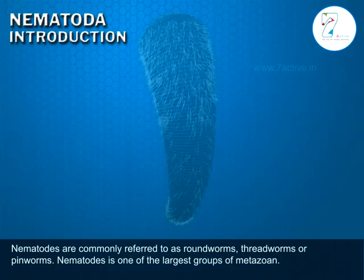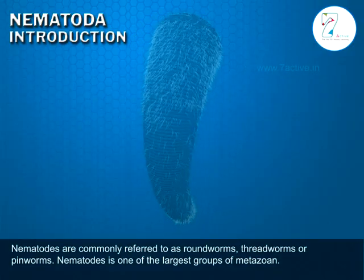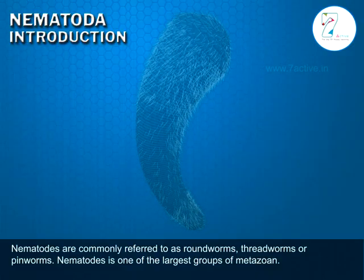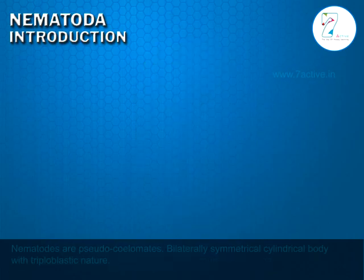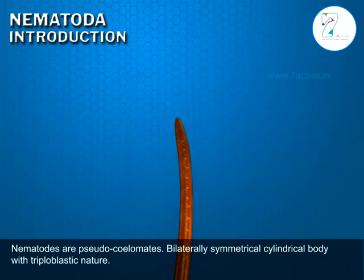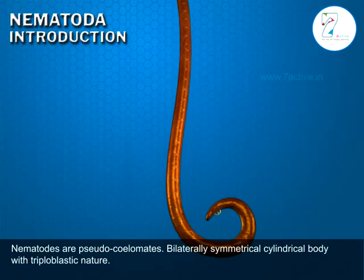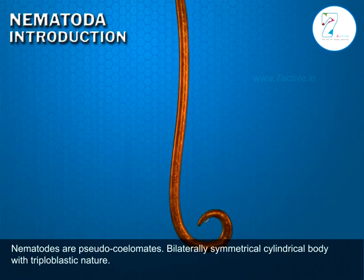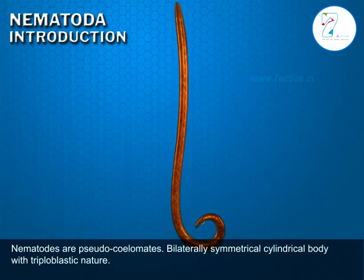Nematodes are commonly referred to as round worms, thread worms, or pin worms. Nematoda is one of the largest groups of metazoa. Nematodes are pseudocoelomates, bilaterally symmetrical, with a cylindrical body and triploblastic nature.